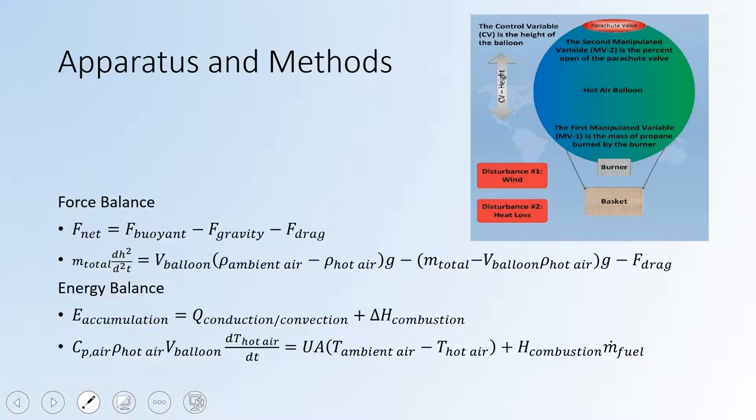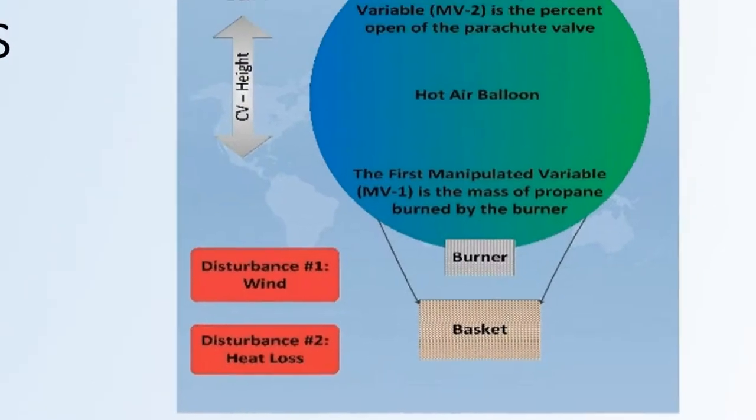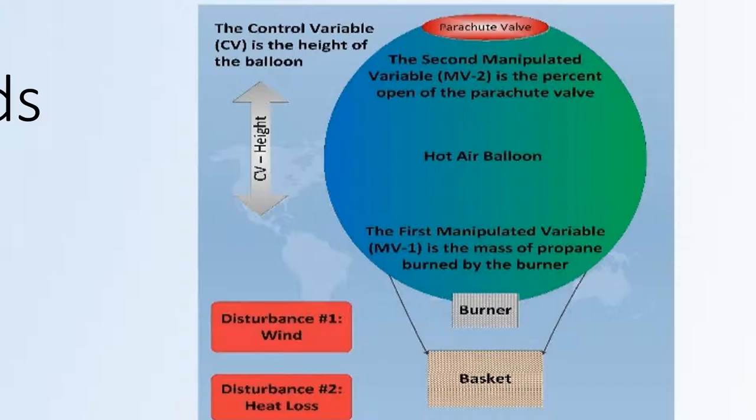Over here we have our diagram of what we're actually trying to control. Our control variable for this project is the height or altitude of the hot air balloon. We've got two manipulated variables: the first is the burn rate, the rate that we're burning propane from the burner, and the second is that parachute valve at top.